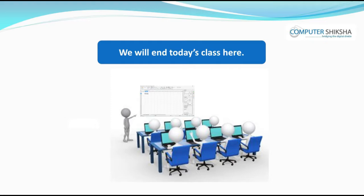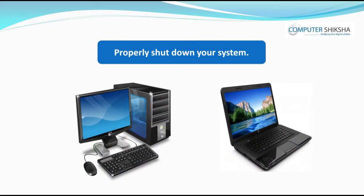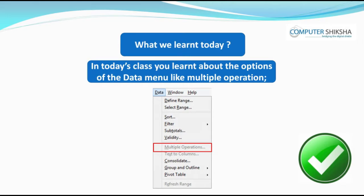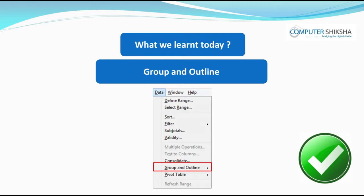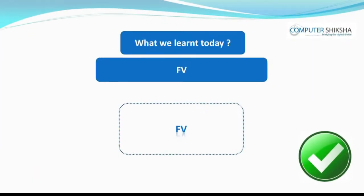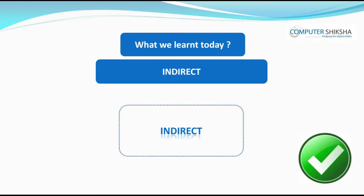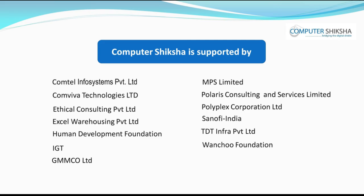Today's class ends here. All of you save your file, close it, and then properly shut down your system. In today's class you learnt about the options of the Data menu like multiple operations, Consolidate, Group and Outline, and Pivot Table. You also learnt about some formulas like PMT, IPMT, PV, NPV, FV, Row, Column, Indirect, Offset, etc. Computer Shiksha is supported by you — thank you.